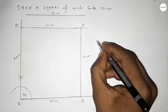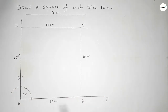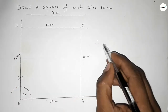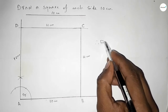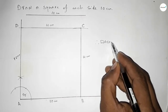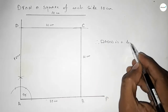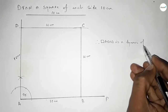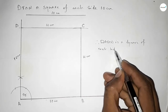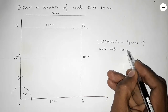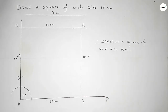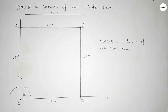Therefore, rectangle ABCD is a square of each side length 10 centimeter. That's all — thanks for watching. If this video is helpful, then please like and subscribe.